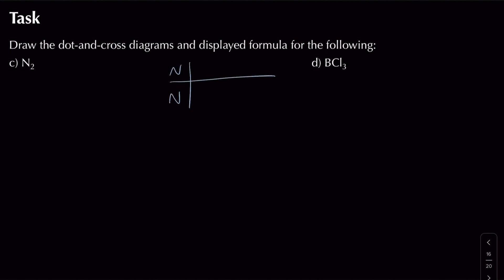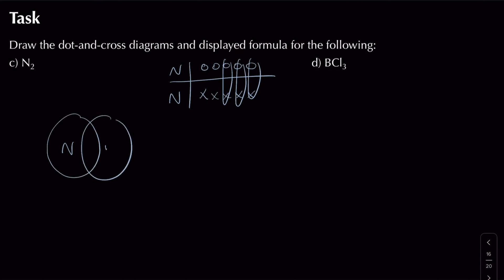For nitrogen (N₂), each nitrogen is in group 5 with 5 electrons in the outer shell. Forming one shared pair gives 6 electrons, two gives 7, but three shared pairs gives a full octet of 8 — so we need a triple bond. The dot and cross diagram shows dots and crosses alternating for the three shared pairs with one lone pair on each nitrogen. The displayed formula shows a triple bond (three lines) between the two nitrogen atoms.